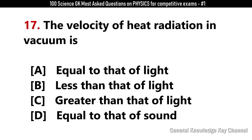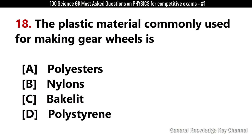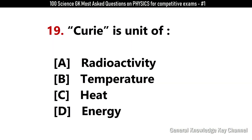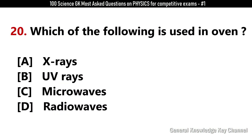The velocity of heat radiation in vacuum is? Answer A: Equal to the speed of light. The plastic material commonly used for making gear wheels is? Answer B: Nylon. Curie is the unit of? Answer A: Radioactivity. Which of the following is used in ovens? Answer C: Microwaves.